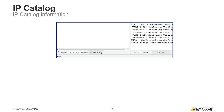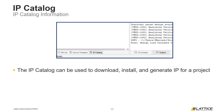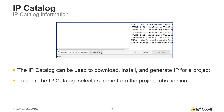To begin, we are going to quickly review some basic information about the IP Catalog. The IP Catalog can be used to download IP from the Lattice IP server, install custom IP packages, and generate IP for a project. The IP Catalog is one of Radiant's three project tabs. To open the IP Catalog, select its name from the Project Tab section of Radiant's workspace, as can be seen from the figure on the slide.